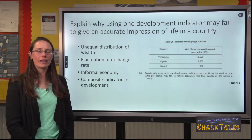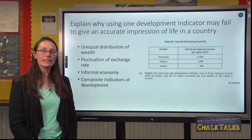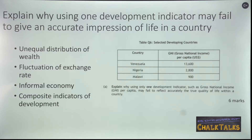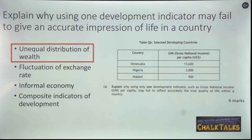You also need to be able to explain why a development indicator may give a misleading impression of life in a country. This question mentions GNI per capita, which is very similar to GDP per capita but also includes earnings from foreign investments. GNI or GDP per capita can be misleading in a country with a few very rich people and a lot of poor people. An unequal distribution of wealth can mean that many people don't have access to services such as medical care, and as a result have a poor quality of life.